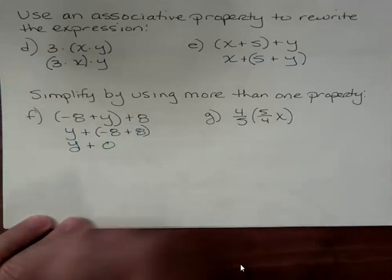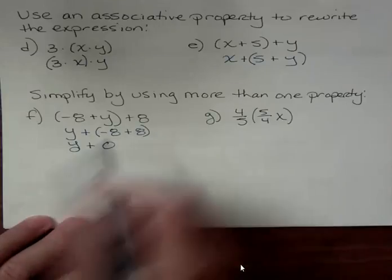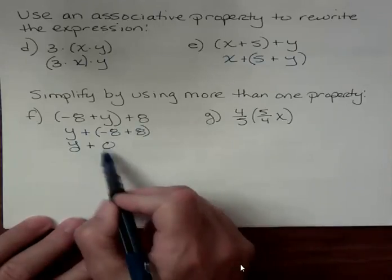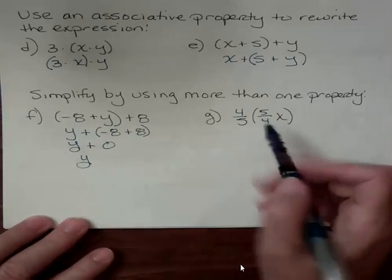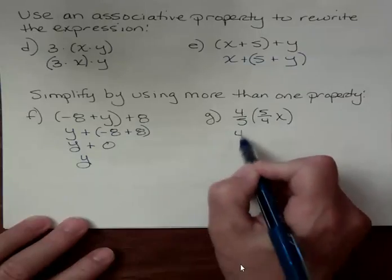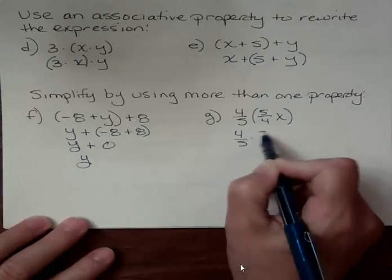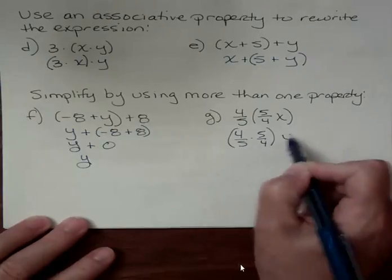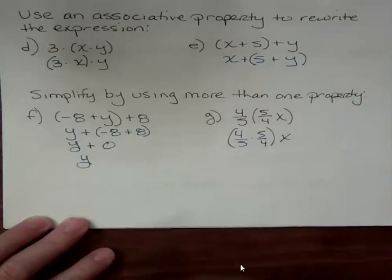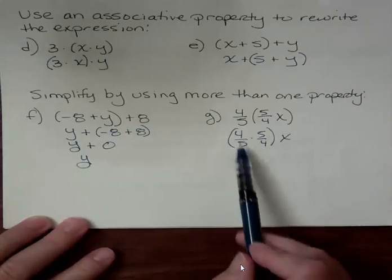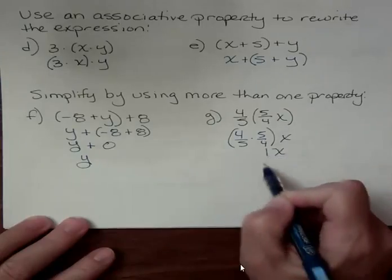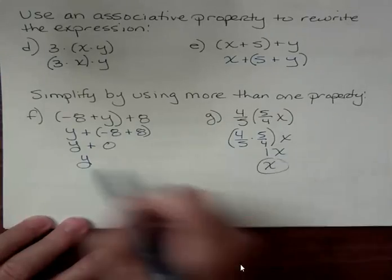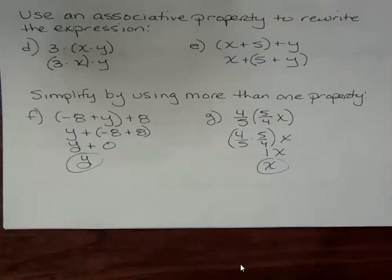And finally, well, I don't need to put 0 because I have the property that says the identity property, so I would just write y. So all I really have to do is write y there, I'm using that. And here, if I want to use more than one property, I'm going to start off by regrouping. That's the associative property. And I know that anything times its own reciprocal gives me 1, so I just get 1x, which I can just state as x. So I can simplify those using more than one property.